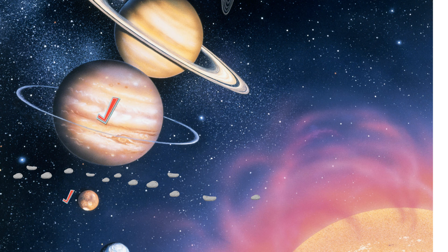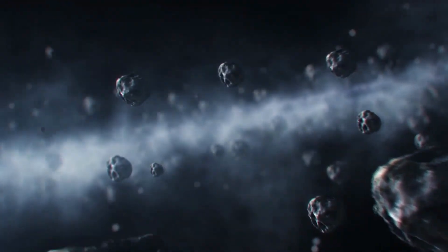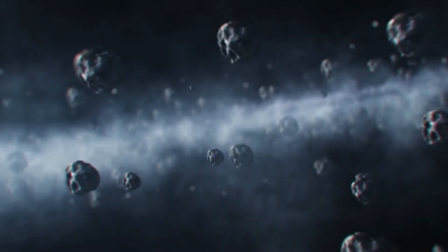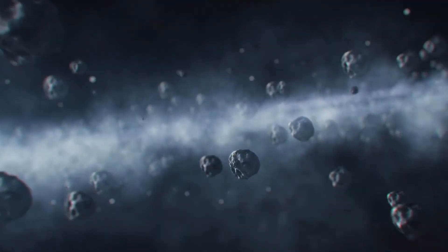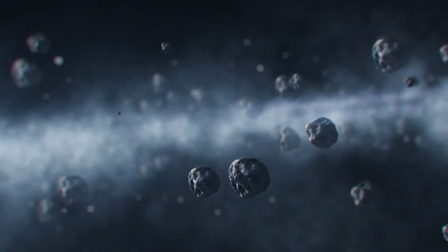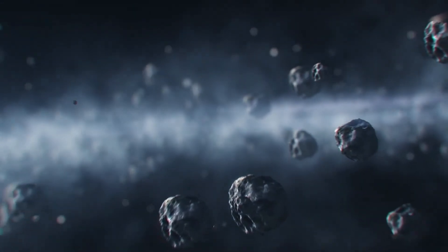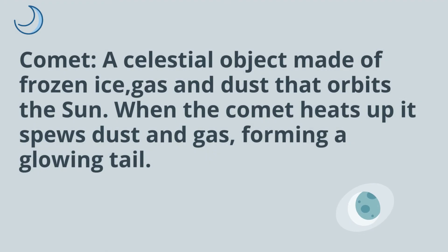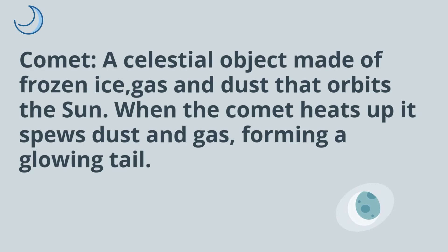This video clip is a little deceiving because there is still a great deal of space between each asteroid. A comet is a celestial object made of frozen ice, gas, and dust that orbits the sun. When the comet heats up, it spews dust and gas forming a glowing tail.